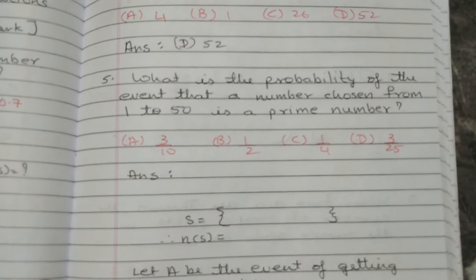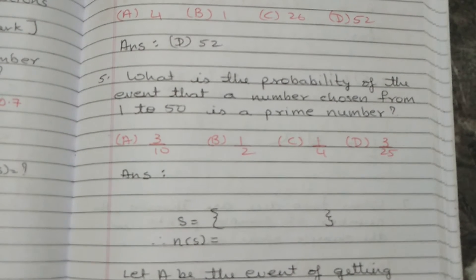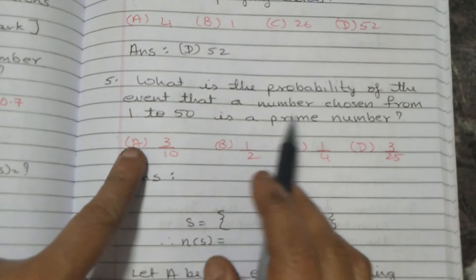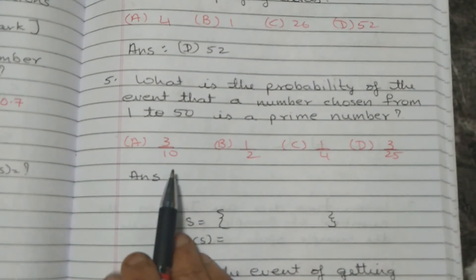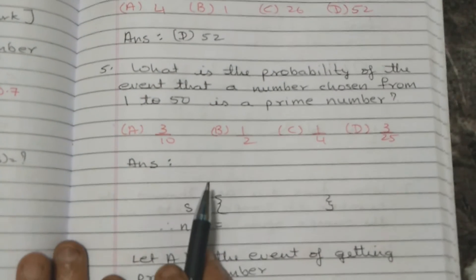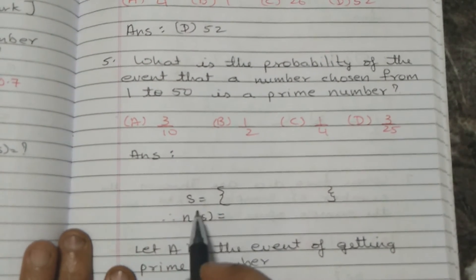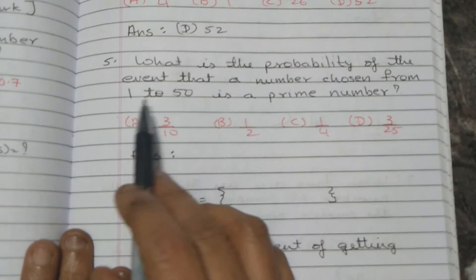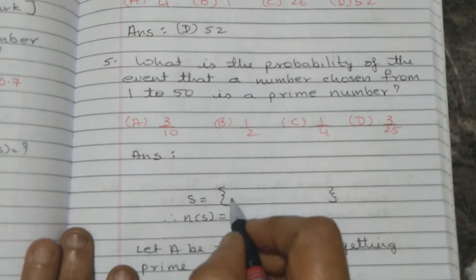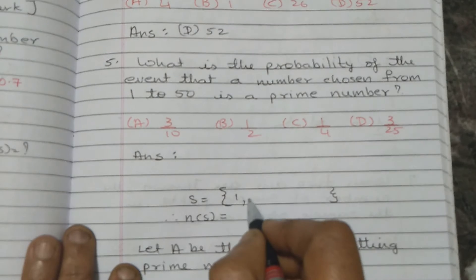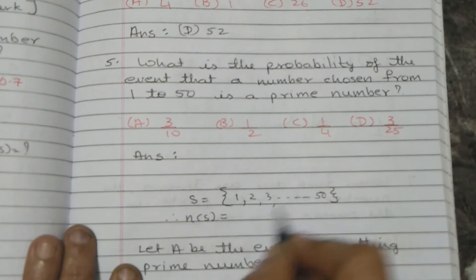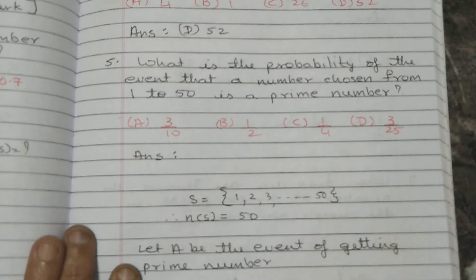Next question: what is the probability of the event that a number chosen from 1 to 50 is a prime number? The sample space S contains numbers 1, 2, 3 and so on till 50. So NS equals 50.